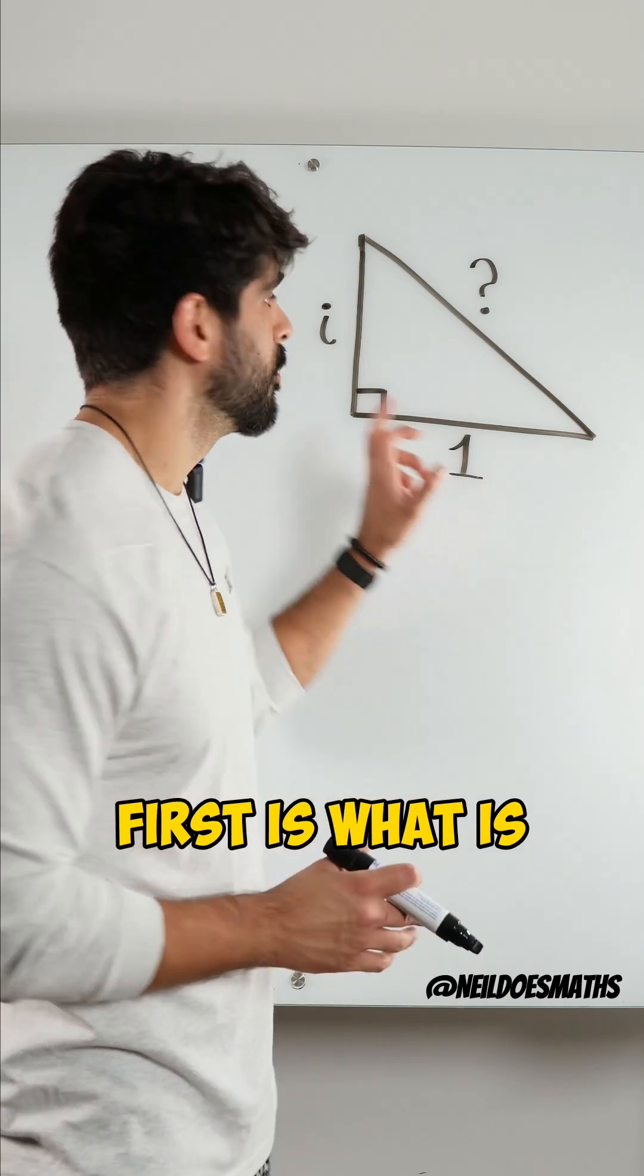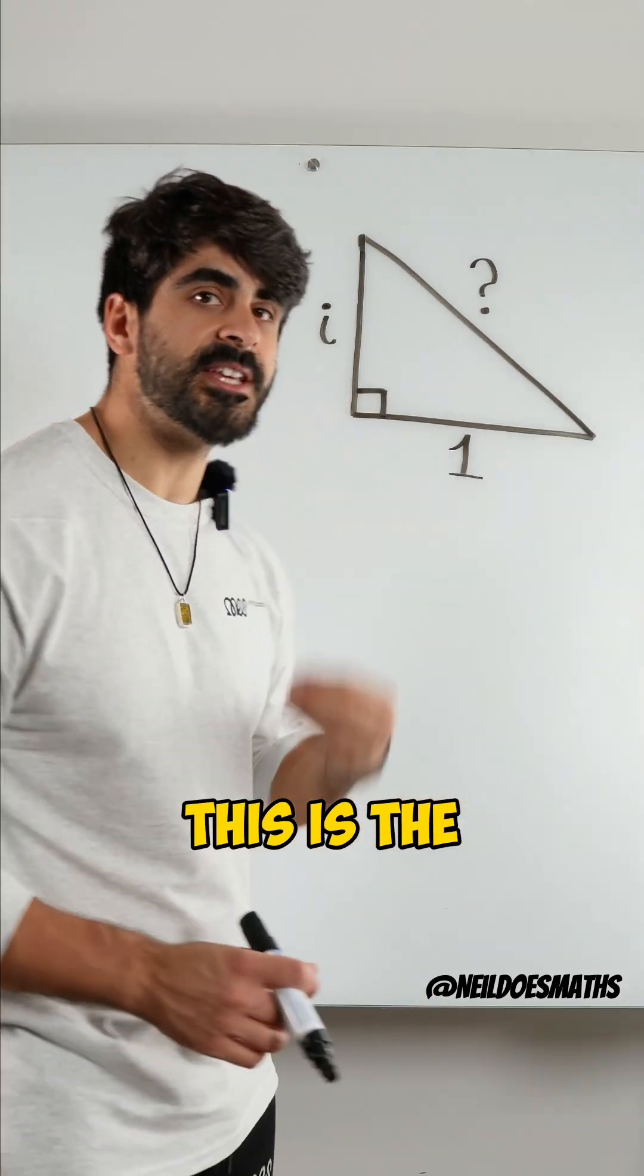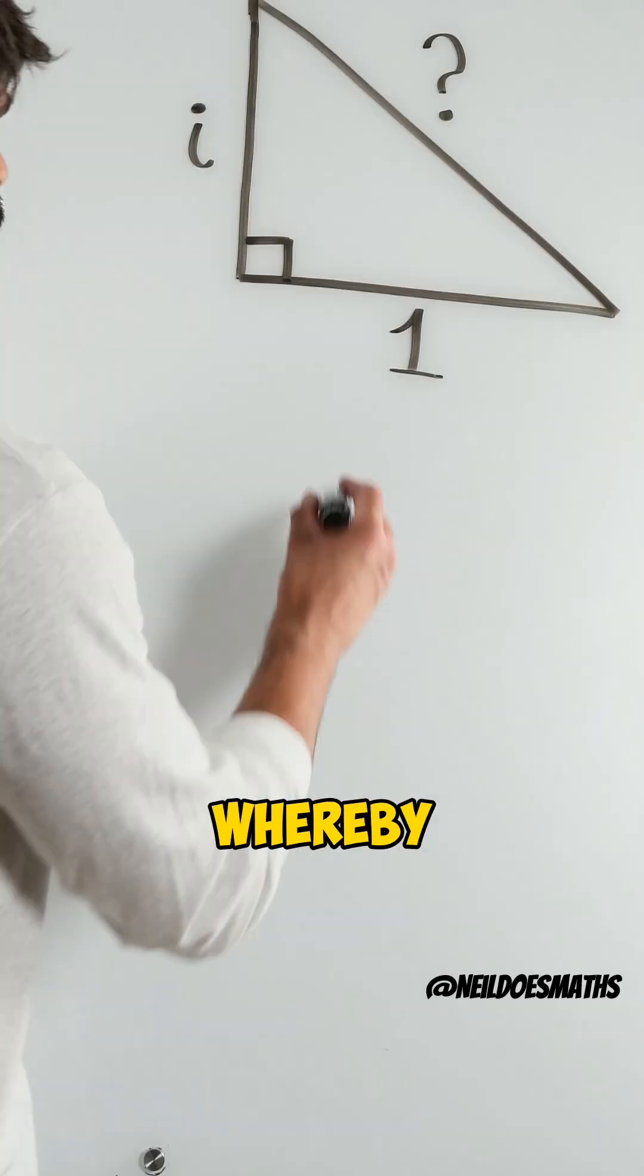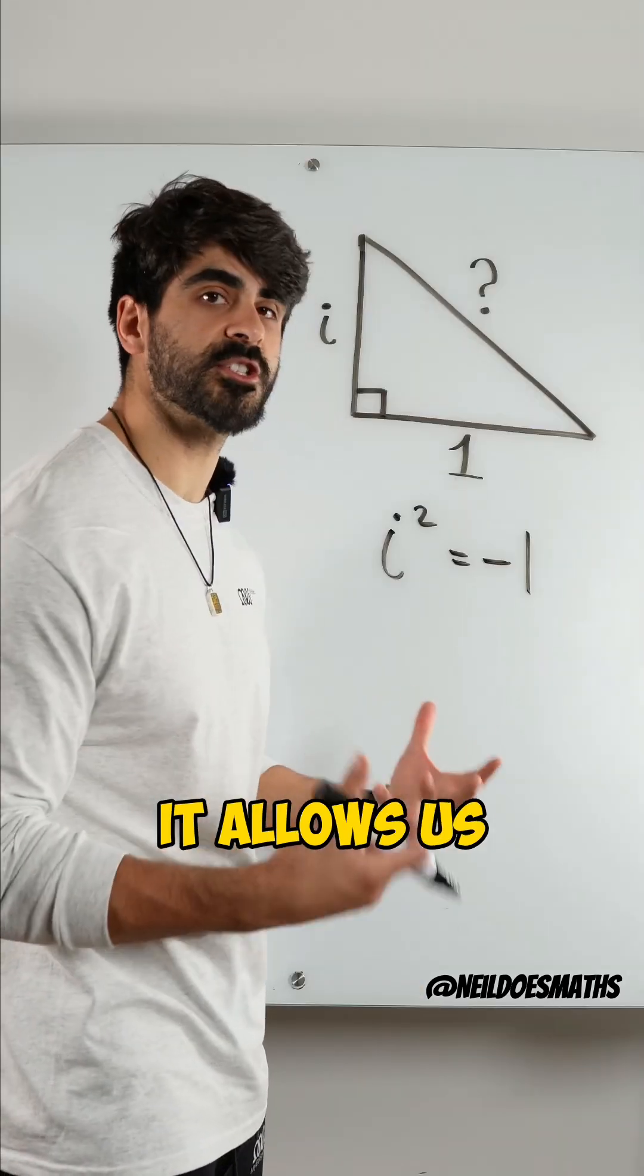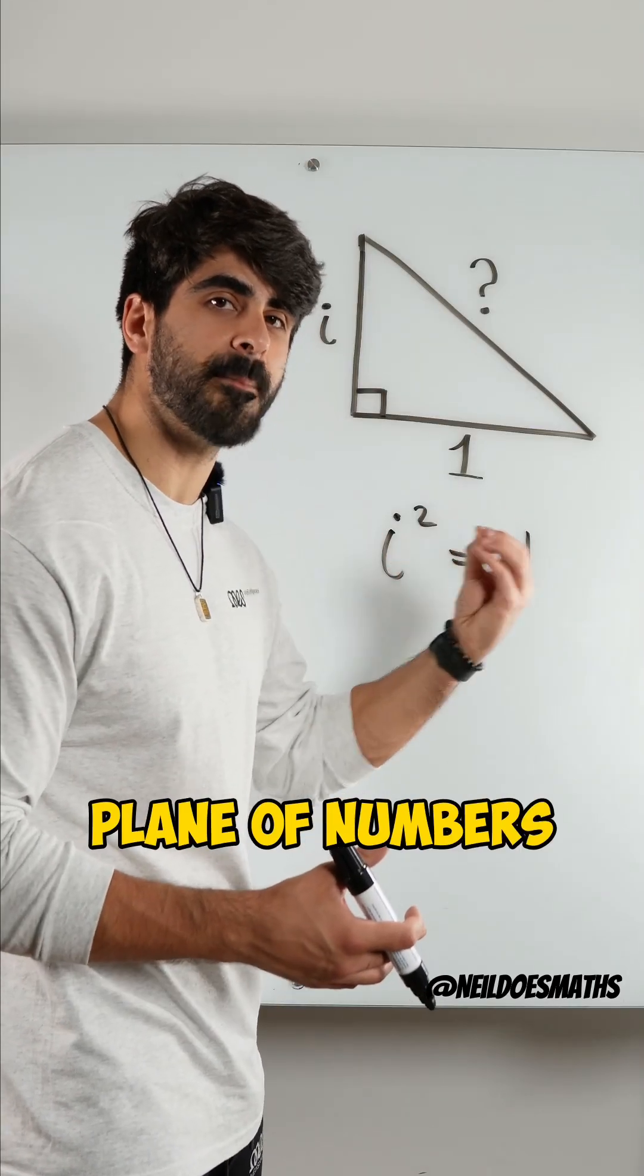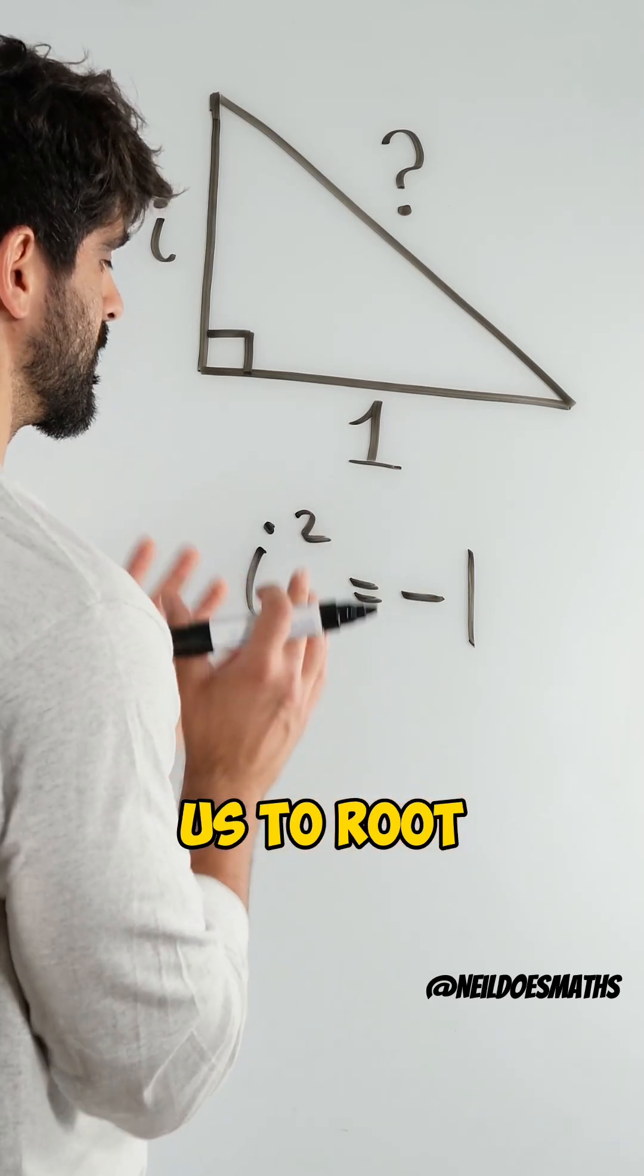First things first, what is this constant i? This is the imaginary constant where i squared is negative one, and it allows us to move into a different plane of numbers, allowing us to root negatives.